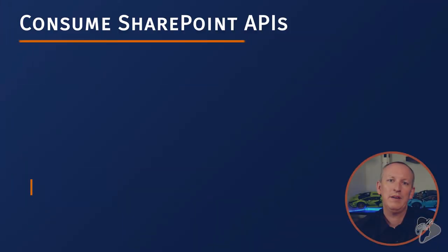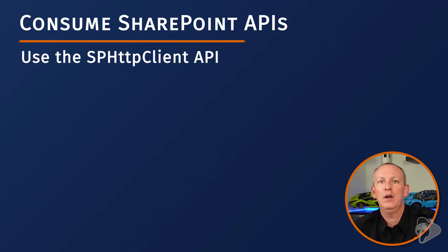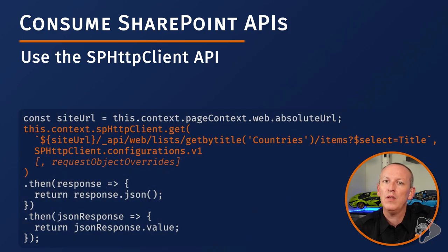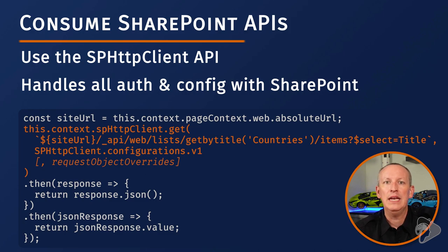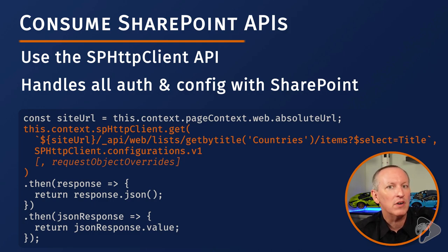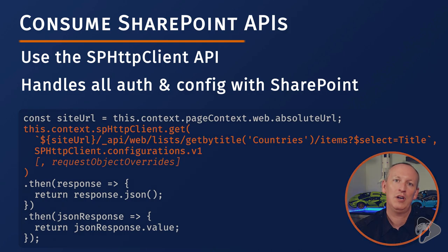The next and maybe more common endpoint you'll consume within your custom SPFx components is the SharePoint REST API. The SharePoint framework includes the SPHttpClient API, which is used to call the SharePoint REST APIs in the same site where the component is running. It looks identical to the HTTPClient sample, but the nice thing is it handles all the authentication and configuration required to call the SharePoint REST API. An optional third argument on the GET and POST methods enables developers more control over request headers and body. Under the covers, the SPHttpClient object is just reconfiguring the HTTPClient to call the SharePoint REST API.